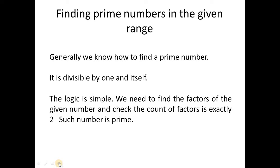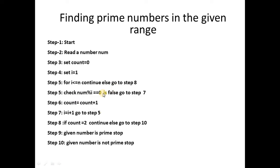There is a previous video on finding whether a single number is prime or not. But in this video, we are discussing a range. First, we'll look at the code for one number — the algorithm steps. We initialize a count, then check divisibility from 1 to the number. This is step 5.1 of the algorithm.